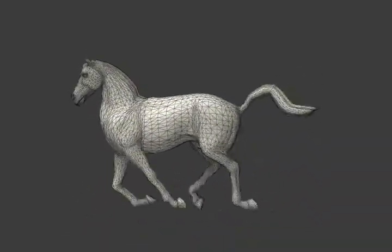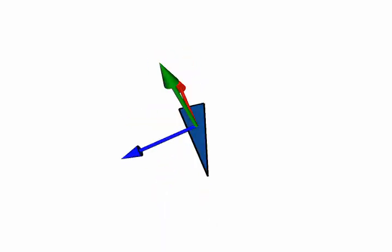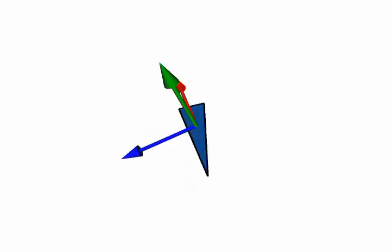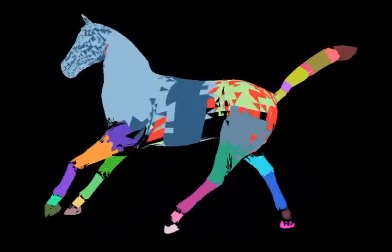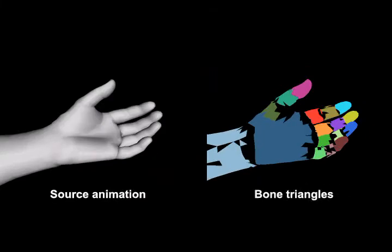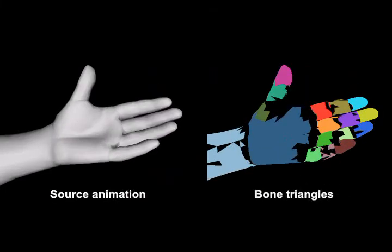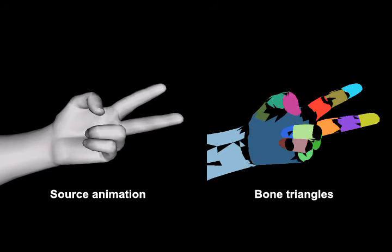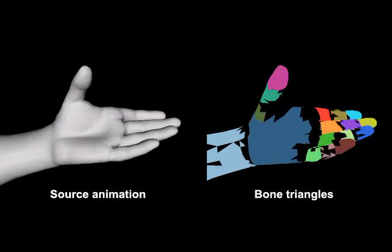To skin a mesh sequence, we first estimate proxy bone transforms for the otherwise skeleton-free mesh sequence. Given the motion sequence of any triangle, we can compute its rotation sequence using the polar decomposition. We cluster these rotation sequence points using mean-shift clustering, and thereby estimate near-rigid mesh components. Mean-shift clustering allows us to identify near-rigid structure robustly in the presence of rotation sequence outliers, and automatically determine the essential number of near-rigid components with minimal parameter tweaking.